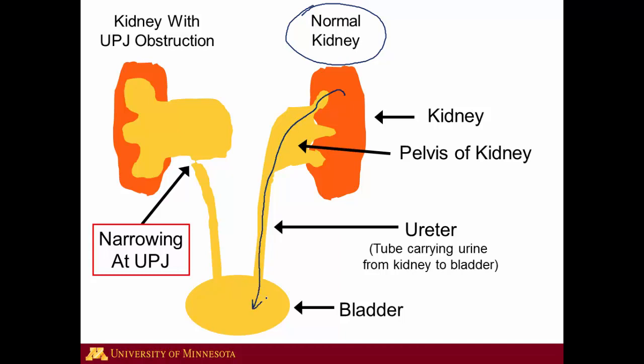That's the normal function of the kidney, ureter, and bladder. The bladder holds the urine so that you can urinate periodically. When we talk about ureteropelvic junction obstruction, what we're focusing on is the area between the pelvis of the kidney and the ureter, and that area is right here.